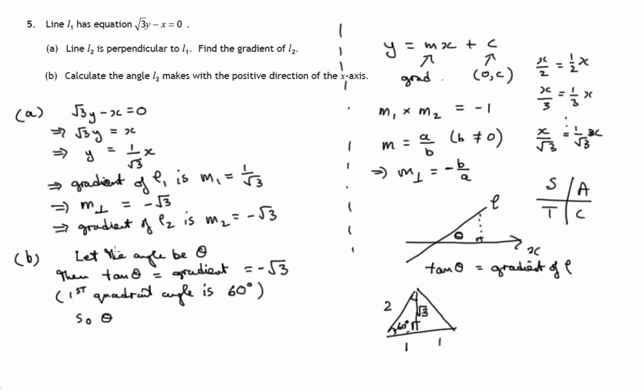So theta, this is the angle we're after, since it's second quadrant, remember in second quadrant angle we go all the way round to 180 and take away the first quadrant angle. So theta is 180 minus 60 degrees, so that would be 120 degrees. So the angle that L2 makes with the positive direction of the x-axis is 120 degrees.